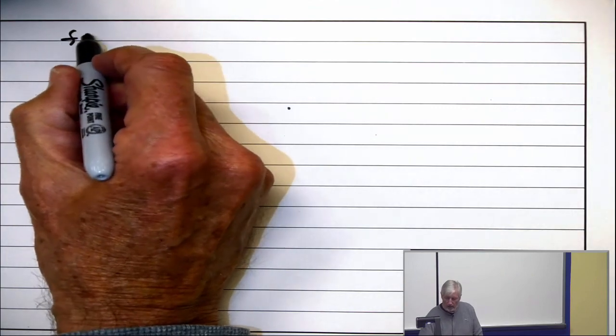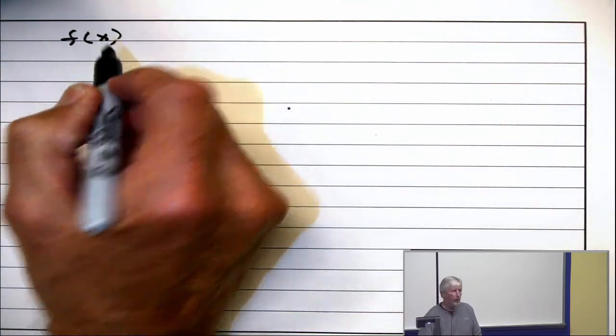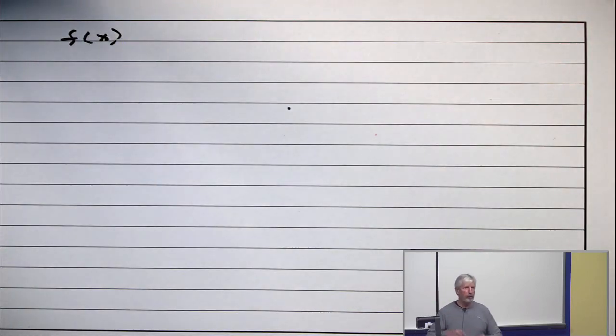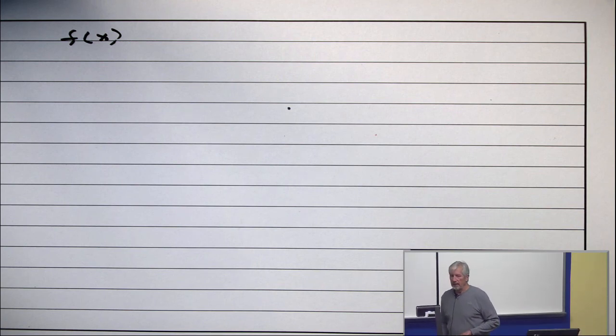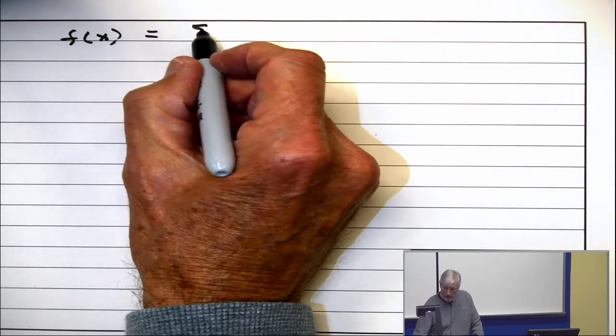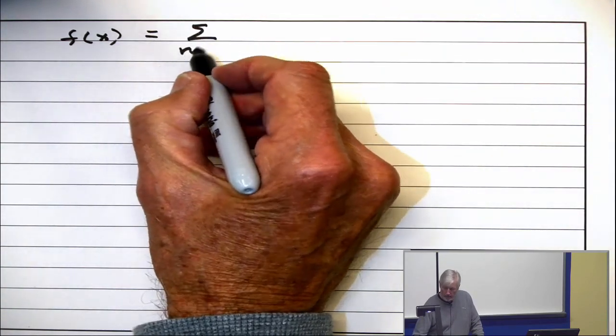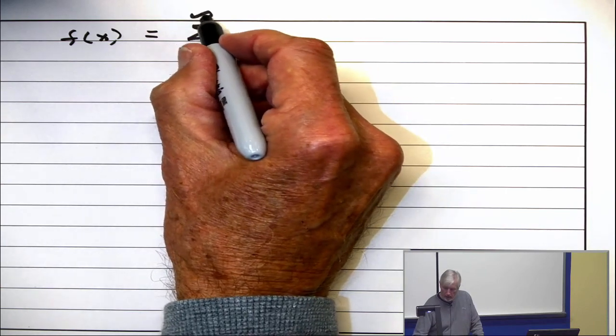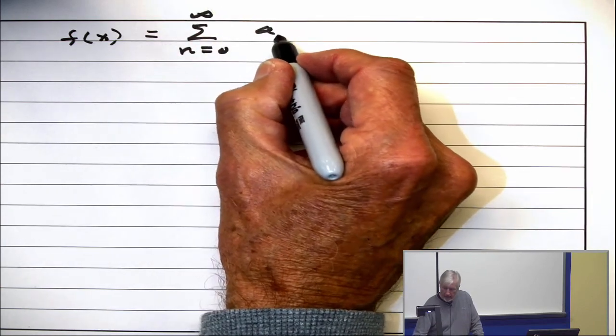So I'm going to remind you. If you have a fully differentiable function f of x—fully differentiable means you can differentiate as many times as you want—and you want to take the Taylor series of the form n equals zero to infinity of some a_n, and then x minus some c to the nth power.